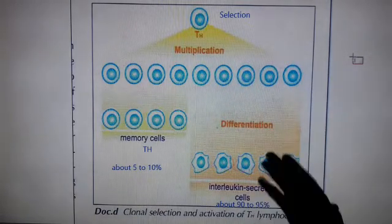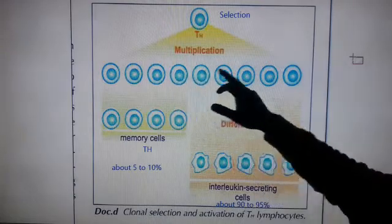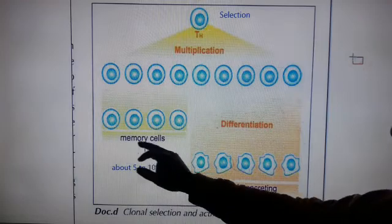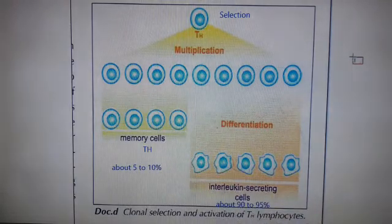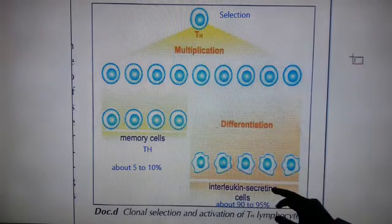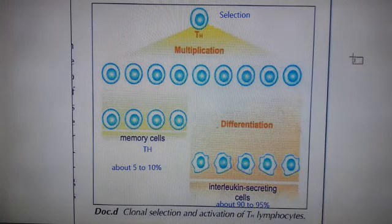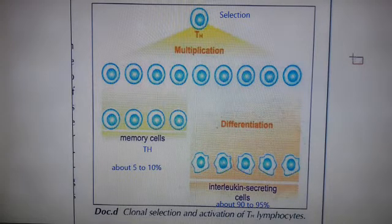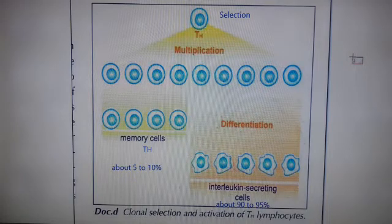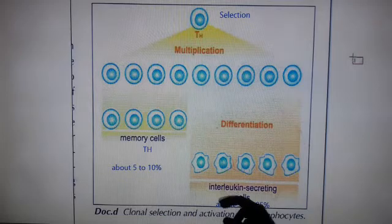And finally, the differentiation phase. Some of these cells — a few cells, about 5 to 10% — will become memory TH cells, while the majority, about 90 to 95%, will become interleukin-secreting effector cells. These cells secrete a chemical substance called interleukin. What is the importance of interleukin?